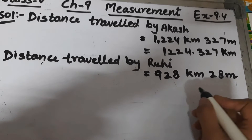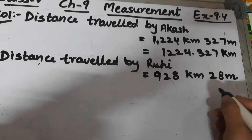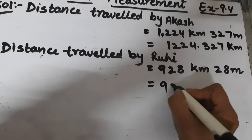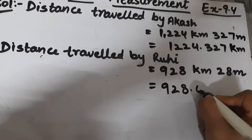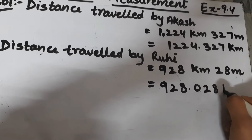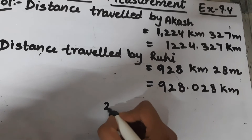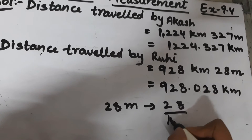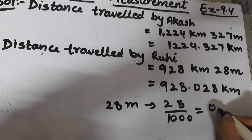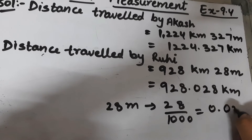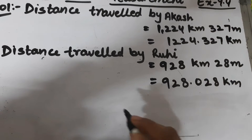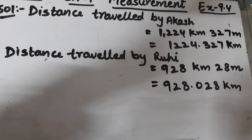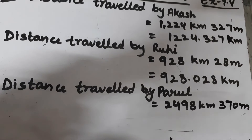The distance traveled by Ruhi is 928 kilometers and 28 meters. We will convert it into kilometers. Since 28 meters divided by 1000 equals 0.028 kilometers, this becomes 928.028 kilometers. So the distance traveled by Ruhi is 928.028 kilometers.